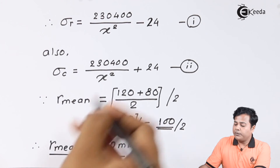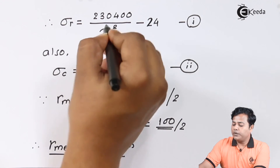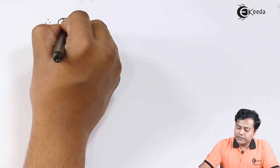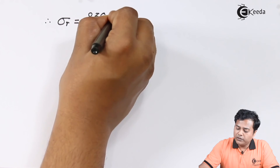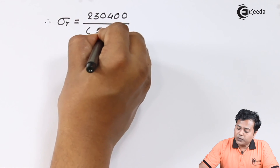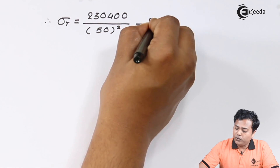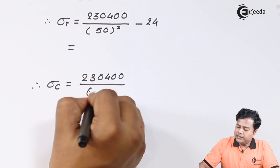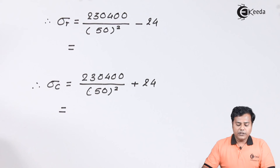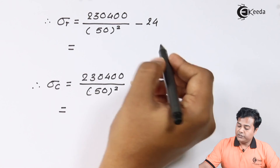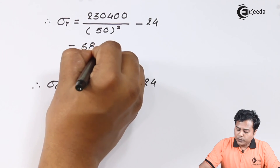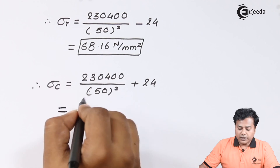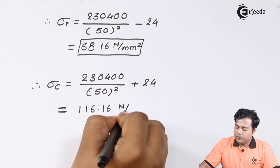Using the mean radius of 50 mm, substituting into the expressions: Sigma R equals 230,400 divided by 50 squared minus 24, and Sigma C equals 230,400 divided by 50 squared plus 24. Solving these gives Sigma R equals 68.16 Newton per mm square and Sigma C equals 116.16 Newton per mm square.